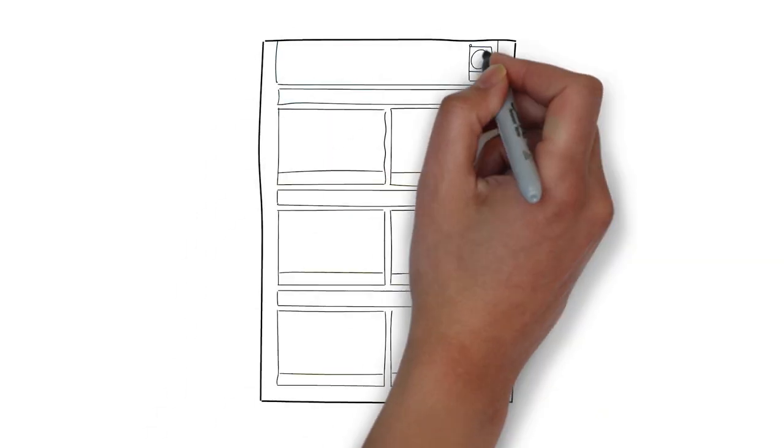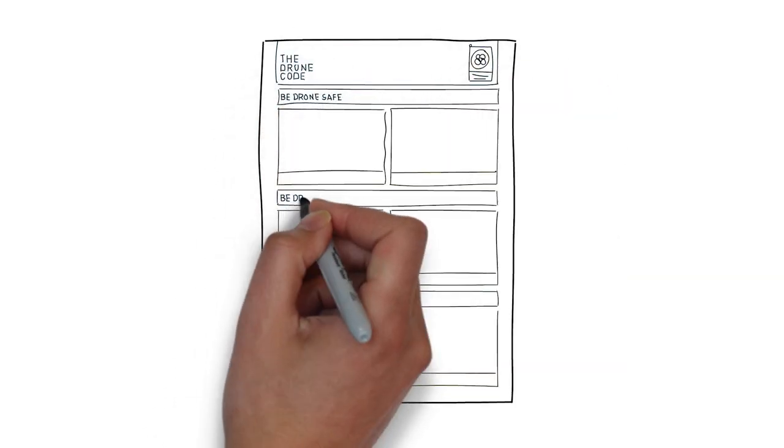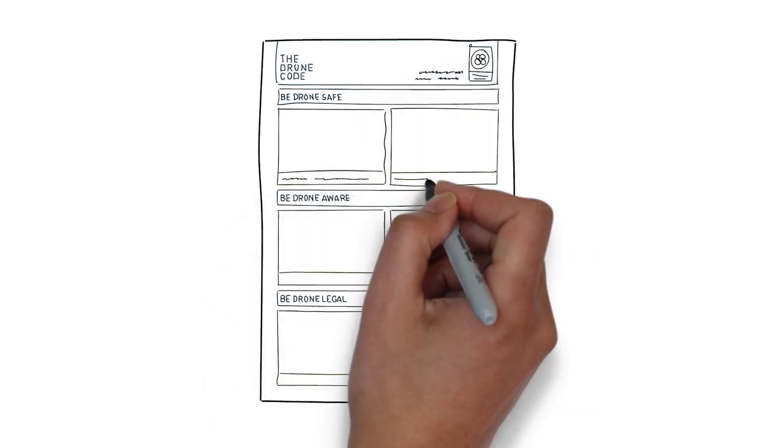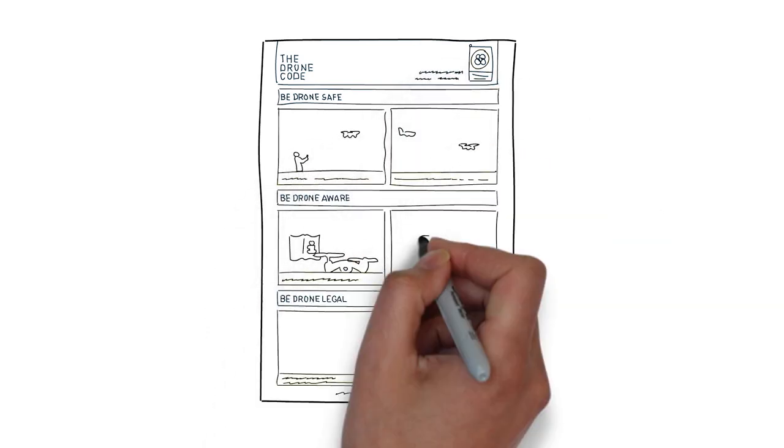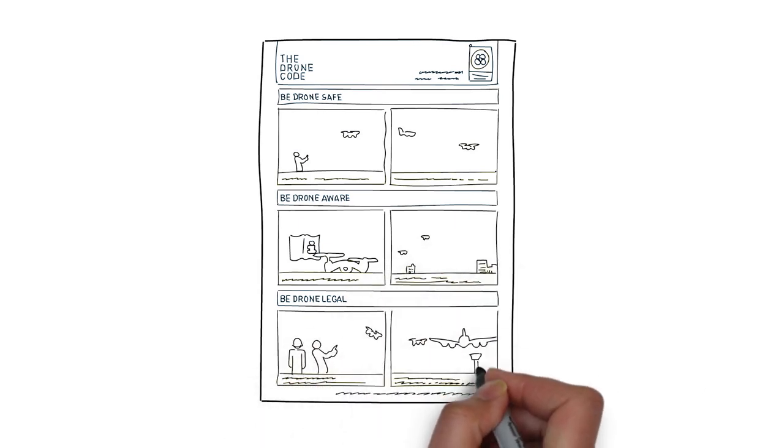You can find this easily online. Just search for the CAA and drones and you'll quickly find it. It gives you lots of advice on how to operate within the rules and how to be safer.